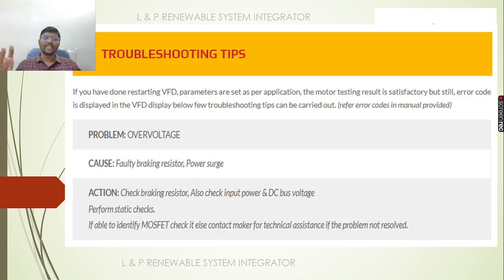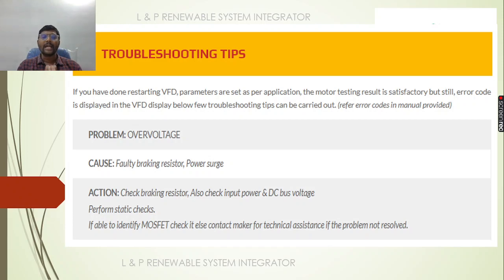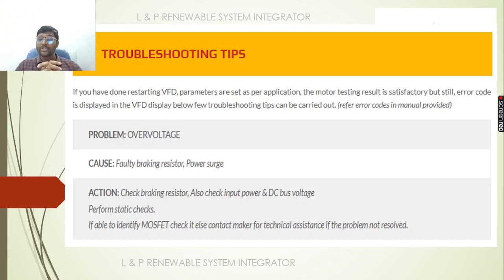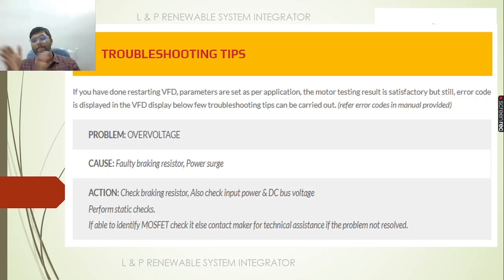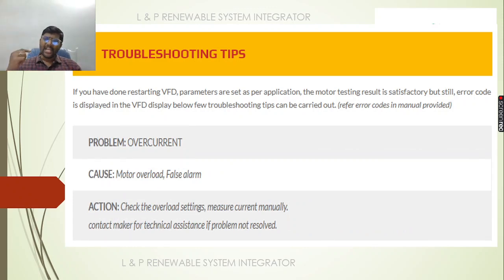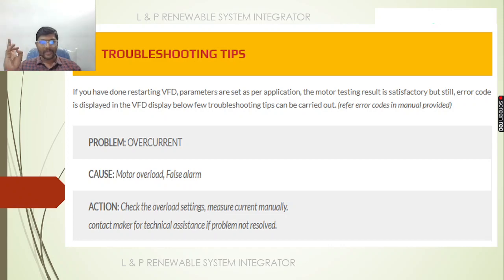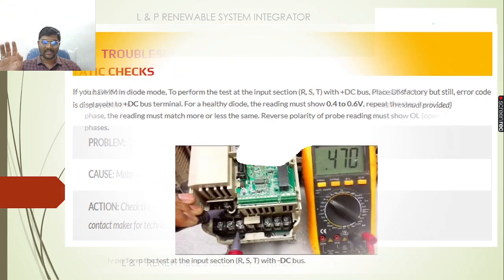Next, if you are facing any overvoltage issue, the cause will be a faulty braking resistor or a power surge. The action is to check the braking resistor, check the input power and DC bus voltage, and perform the static checks. Most importantly, identify the MOSFET and check — contact the manufacturer for technical assistance. Next, if you are facing any overcurrent issue, the cause will be motor overload or a false alarm. Check the overload settings and measure the current manually. If the problem is not yet resolved, contact the relevant technical persons for assistance.